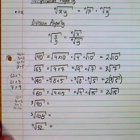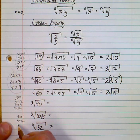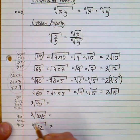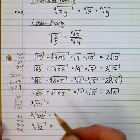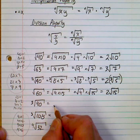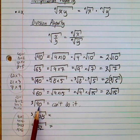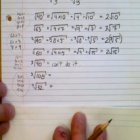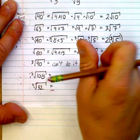For the cube root of 90: the factors include 90×1, 45×2, 9×10, and 15×6. None of those are perfect cubes — and don't be tricked by 9, which is a perfect square, not a perfect cube. So the cube root of 90 cannot be simplified.